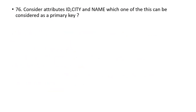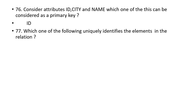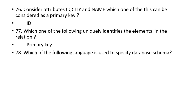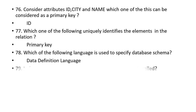Consider attributes ID, city, and name. Which one of these can be considered as a primary key? ID. Which one of the following uniquely identifies elements in a relation? Primary key. Which of the following languages is used to specify database schema? Data Definition Language (DDL).